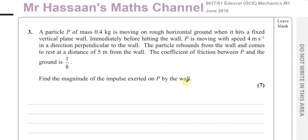Welcome back to Mr. Hassan's Maths channel. I'm answering a question from the old M1 GCE specification, June 2016, the 6677 syllabus. This question is about impulse and momentum with other things mixed in. A particle P of mass 0.4 kg moves on rough horizontal ground and hits a fixed vertical wall. Just before hitting the wall, P moves at 4 m/s perpendicular to the wall. The particle rebounds and comes to rest 5 meters from the wall. The coefficient of friction is 1/8. Find the magnitude of the impulse exerted on P by the wall.